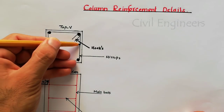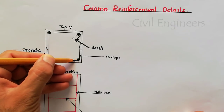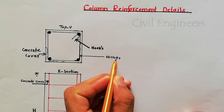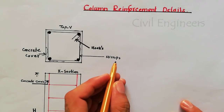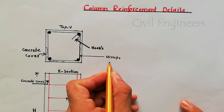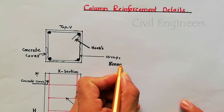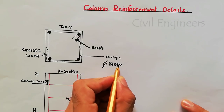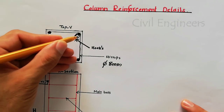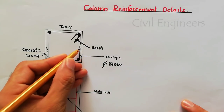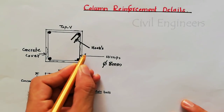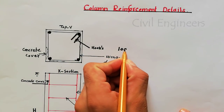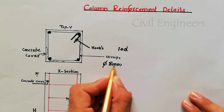After the concrete cover, this steel element is called stirrups. Remember that the diameter of the stirrup should not be less than 8 mm — this is very important. These are called hooks and they connect with the stirrups. The hook length should be 10d, where d is the diameter of the stirrup.